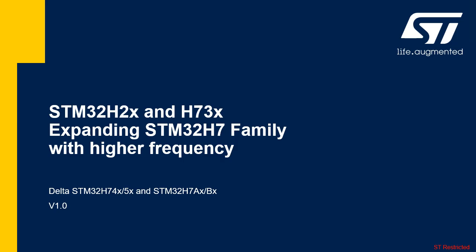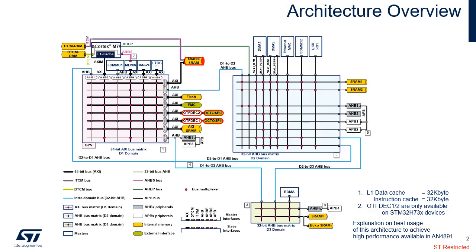The following slides present an overview of the architecture of the new variants of the STM32H7 family. The schematic shows the architecture of the STM32H7273 lines. The main differences with STM32H7475 microcontrollers are highlighted in red. Only one bank flash is available compared to the dual bank flash of STM32H7475 lines.